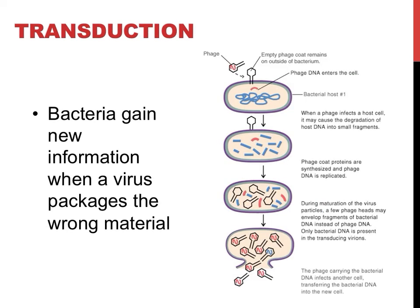The last process by which bacteria can gain new information is called transduction. In transduction, bacteria are accidentally given new information by a virus. Just like viruses can infect humans, they can also infect bacteria. When viruses infect organisms, they hijack a cell and have it produce lots more viruses. Normally, the virus's DNA is packaged into a virus going out to infect other cells. Sometimes, however, the host cell's DNA — shown in blue in the illustrations on this slide — is packaged instead. The resulting blue DNA virus, shown in the bottom section of the picture, would not infect the next host cell. Instead, it would introduce new genetic material that could happen to be helpful to the new bacteria.